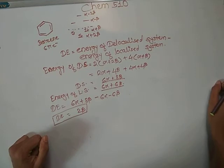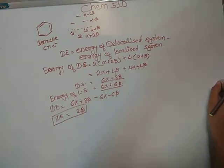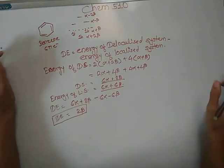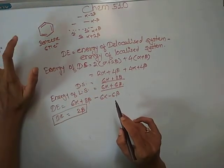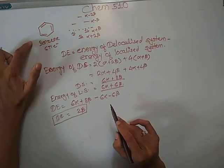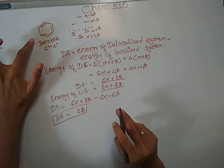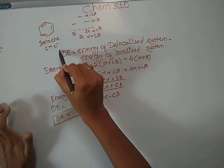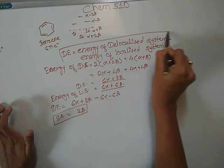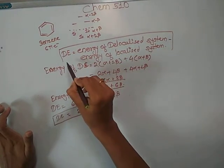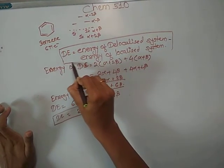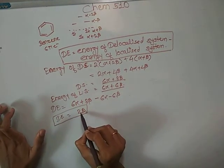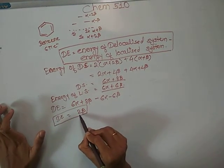In this video we discussed the delocalization energy of benzene, which is an aromatic compound and the most important compound in organic chemistry. The delocalization energy equals the energy of the delocalized system minus the energy of the localized system, and for benzene it equals 2β.